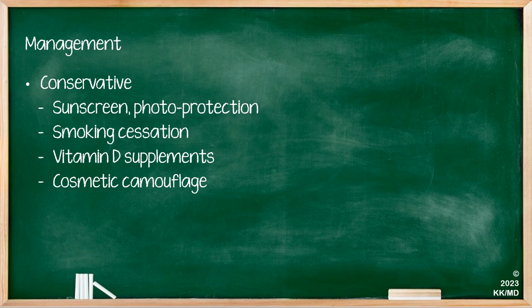The management of discoid lupus is firstly conservative and then medical. Conservative measures may include the use of sunscreen and photo protection. Patients should be encouraged to stop smoking as this can lead to a poorer prognosis of disease. Vitamin D supplementation is crucial, particularly as these patients are encouraged to stay out of the sun or wear sun hats and where possible avoid sun exposure. There's also the use of cosmetic camouflage due to the scarring effects of the condition.